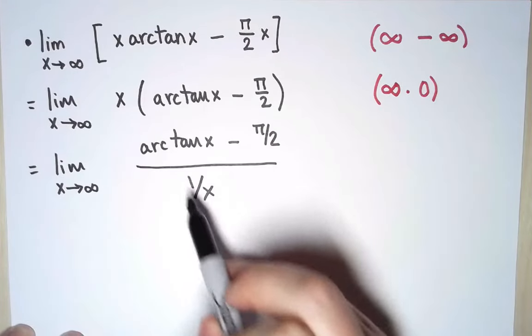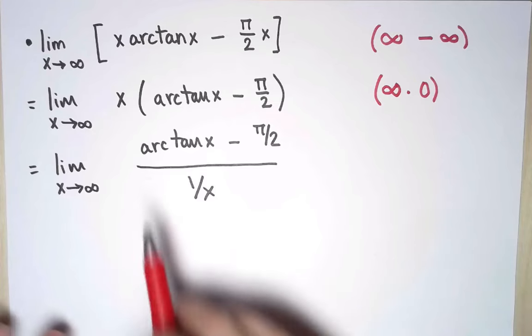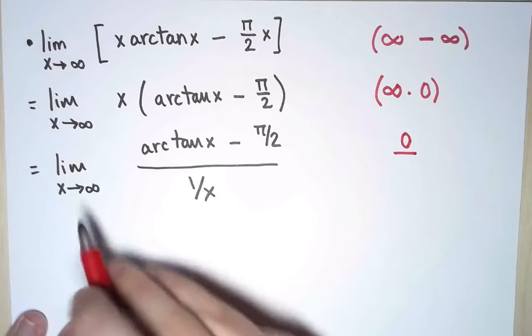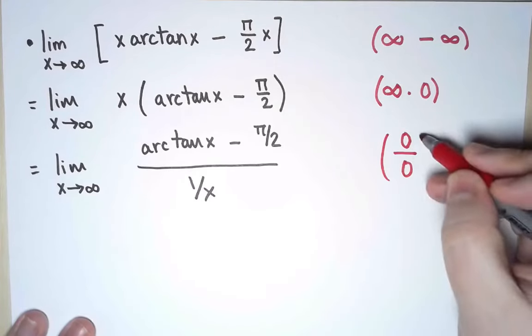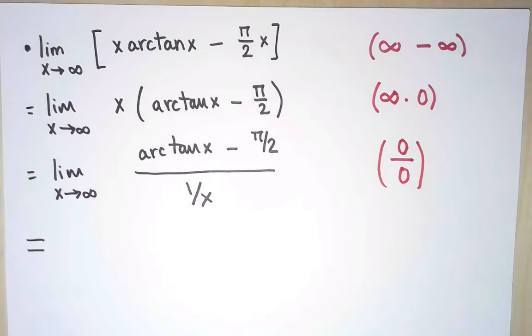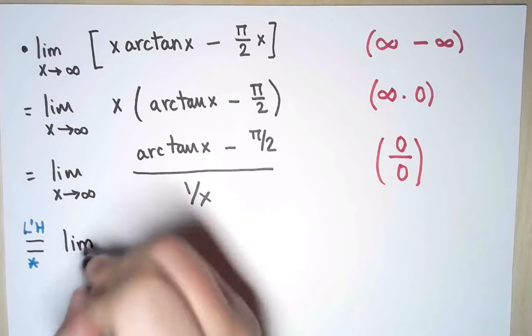I simply wrote x as 1 over 1 over x. And now let's see what we have. The numerator had limit zero before. Still has it. And the denominator, 1 over x as x goes to infinity, has limit zero. Perfect. This is zero divided by zero. So these are the conditions under which I can try to use L'Hôpital's rule.